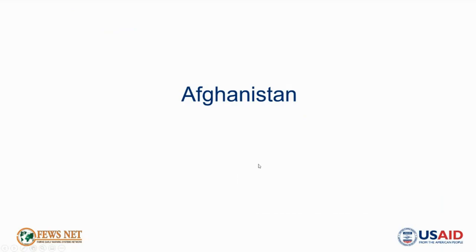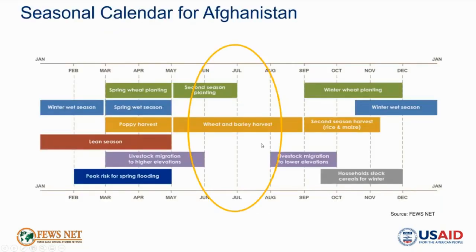Turning now to Afghanistan. Currently we are in the middle of Afghanistan's main harvesting season. Planting of second season crops including rice, maize, vegetables, and cash crops normally concludes around this time. As of late June, the harvest has concluded early across most of the country due to below-average precipitation and above-average temperatures, which shortened the wheat life cycle. In higher elevation areas, harvesting was ongoing or had not yet started as of late June, according to key informants.